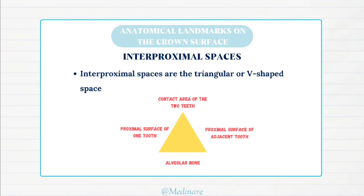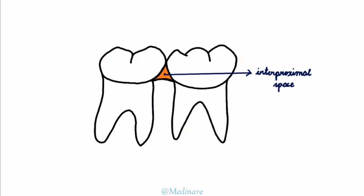Interproximal spaces. These are triangular or V-shaped spaces present cervical to the contact area. It is a triangular space where the apex of the triangle is formed by the contact area of two teeth, the base is formed by the alveolar bone, and the sides are formed by the proximal surfaces of the adjacent teeth. We find interdental papilla from the gingiva in this space. In case of gingival recession, the interproximal space transforms into a cervical embrasure as the interdental bone and the interdental papilla do not fill up that space.